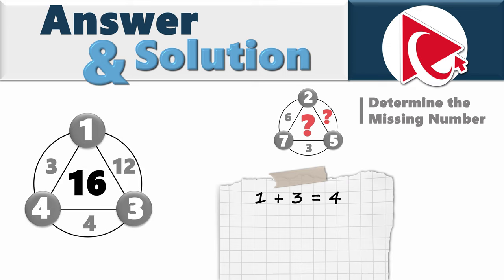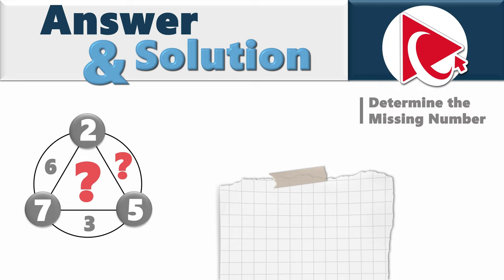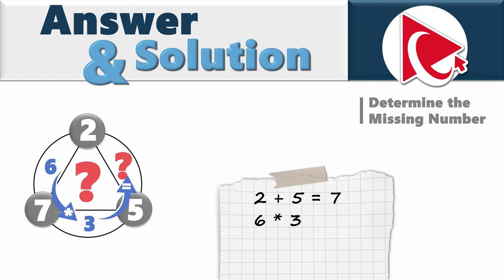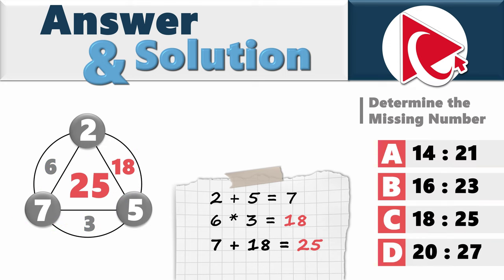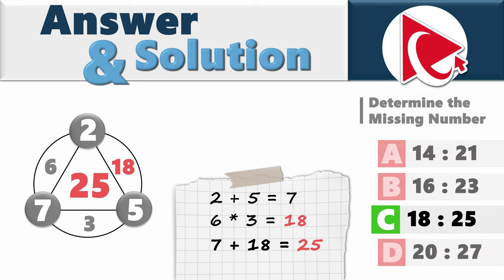Make sure you verify the pattern in the middle shape. For the third shape: 2 plus 5 equals 7 in the small circles. 6 multiplied by 3 equals 18 inside the large circle. And 7 plus 18 equals 25. So the correct answer is choice C: numbers 18 and 25.